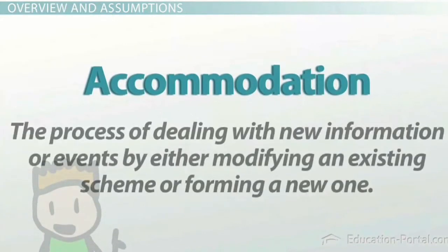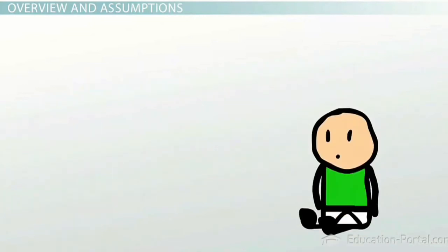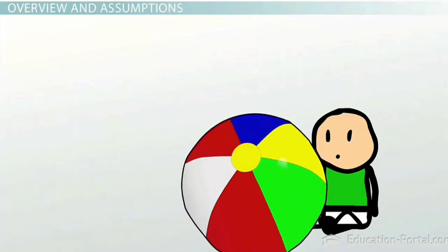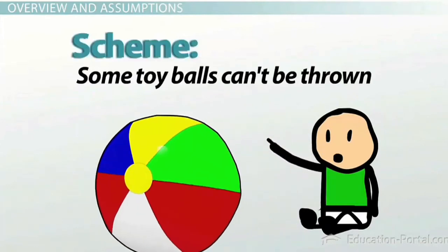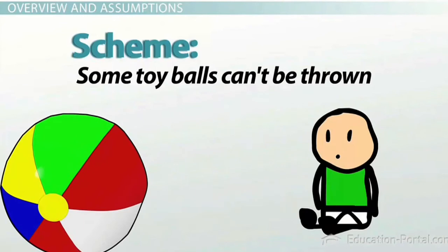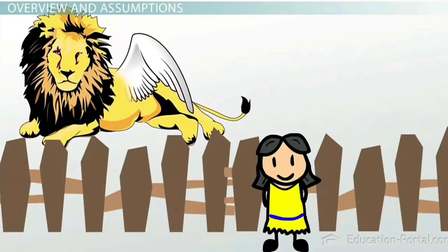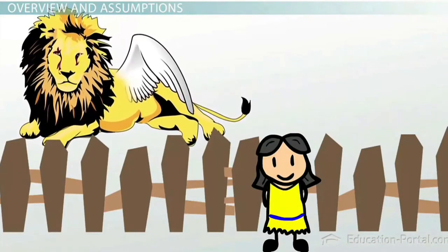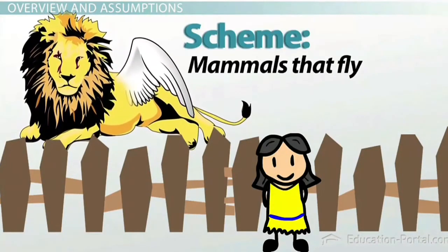Accommodation is the process of dealing with new information or events by either modifying an existing scheme or forming a new one. For example, a toddler may realize that a new ball is too heavy to be thrown, so he may have to roll it, thereby modifying his existing scheme that all toy balls can be thrown. Or, a child at the zoo may note that a furry animal is flying and create a new scheme for that category of animals.